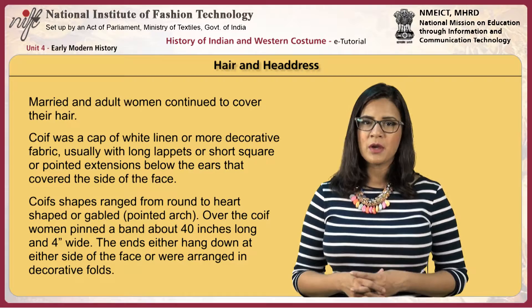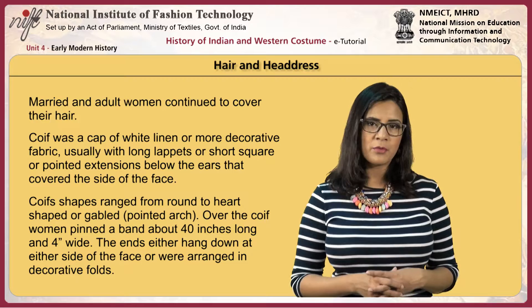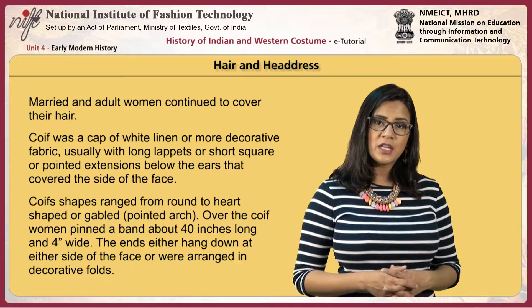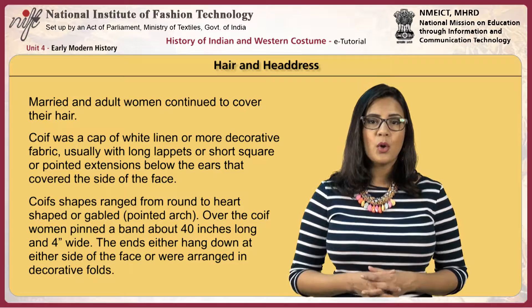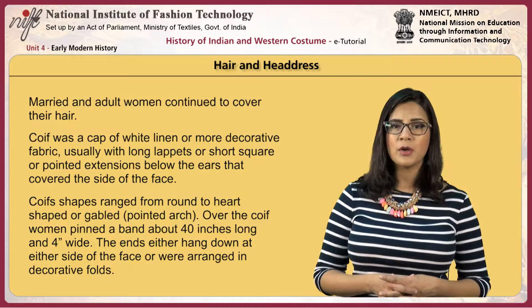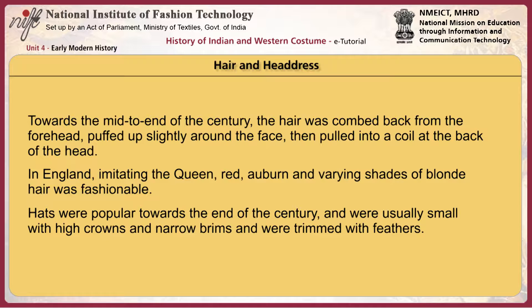Married and adult women continued to cover the hair. The coif was a cap of white linen or more decorative fabric, usually with long lappets or short square or pointed extensions below the ears that covered the side of the face. Coif shapes ranged from round to heart-shaped or gabled, which is a pointed arch. Over the coif, women pinned a band about 40 inches long and 4 inches wide, with ends either hanging down at either side of the face or arranged in decorative folds. Towards the mid to end of the century, hair was combed back from the forehead, puffed up slightly around the face, then pulled into a coil at the back of the head. In England, imitating the queen, red, auburn and varying shades of blonde hair was fashionable. Hats were popular towards the end of the century and were usually small with high crowns and narrow brims, trimmed with feathers.